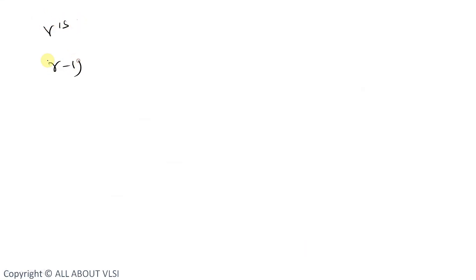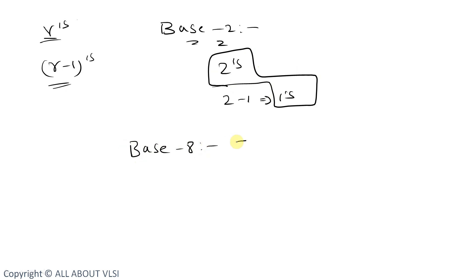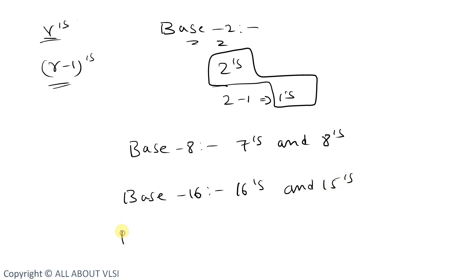We have r's complement and r-minus-1's complement — these are the two types of complements. For base 2 binary numbers, r's complement is 2's complement and r-minus-1 is 1's complement. For base 8 numbers we have 7's and 8's complement, for base 16 we have 16's and 15's complement, and for base 10 we have 9's complement and 10's complement.